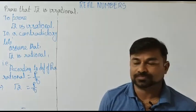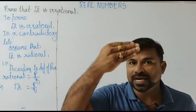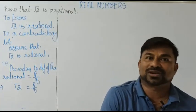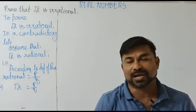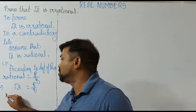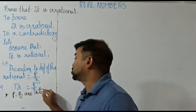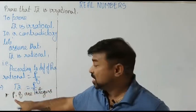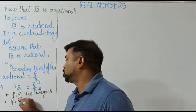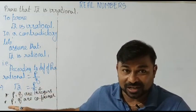We know the rules of rational numbers. According to the definition, a rational number should be in the form of p by q. So root 2, which we assumed to be rational, should also follow the rules: it has to be written in the form p by q. The first rule is that p and q are integers.